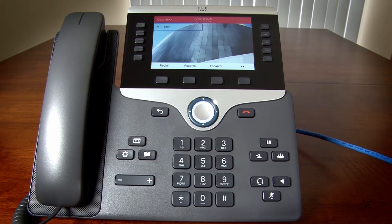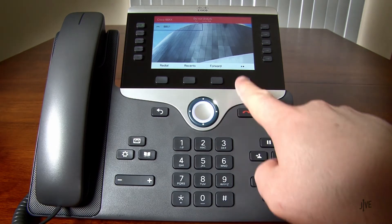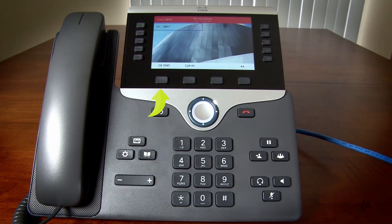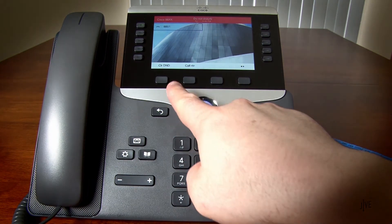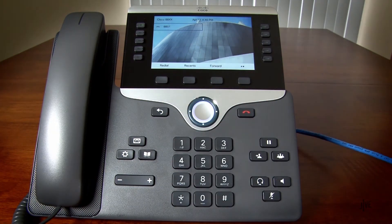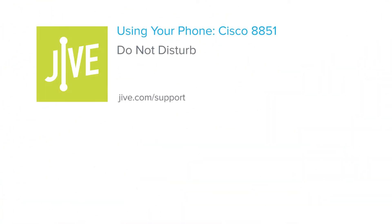To disable that, simply press the DND soft key again. That concludes the process for using the Do Not Disturb feature on a Cisco 8851 phone.